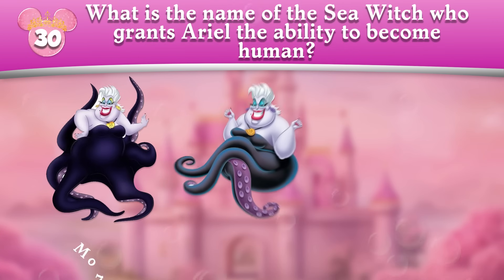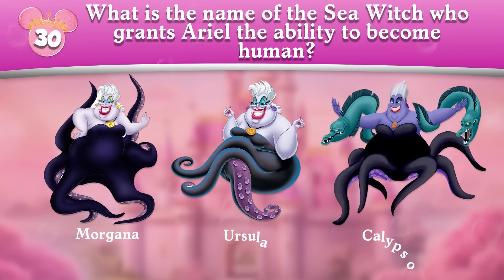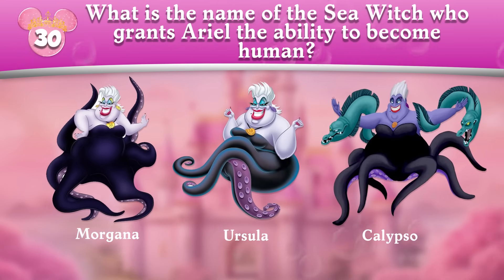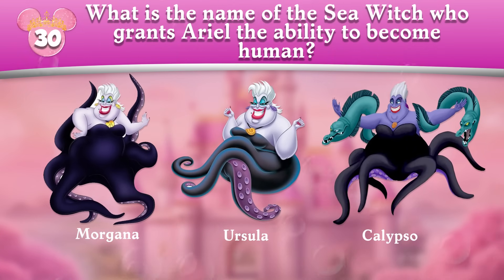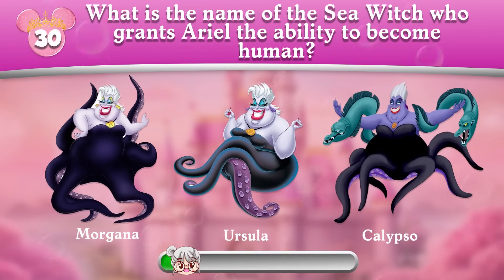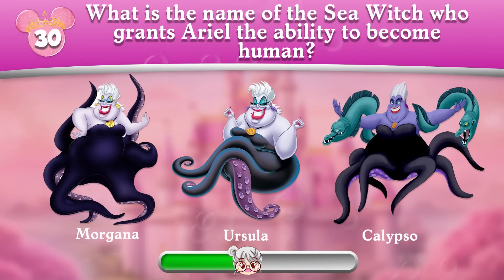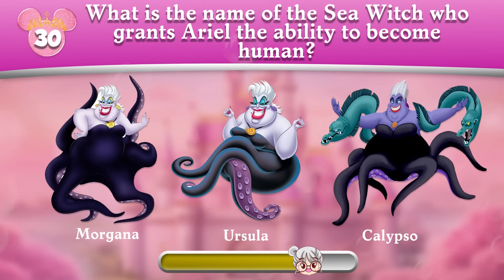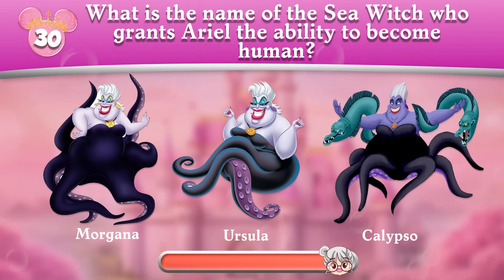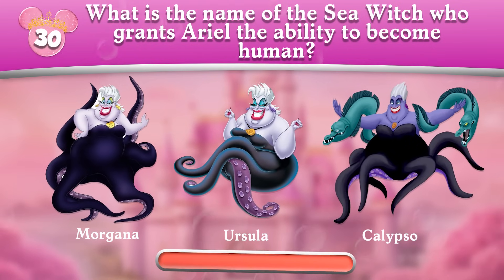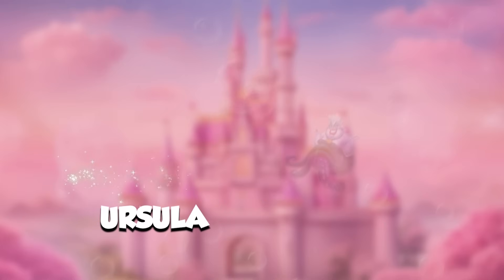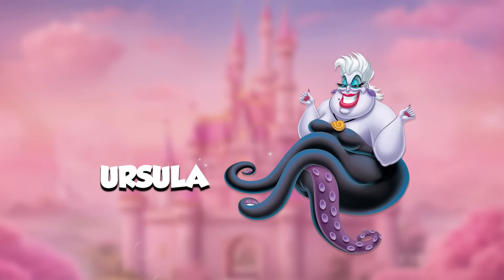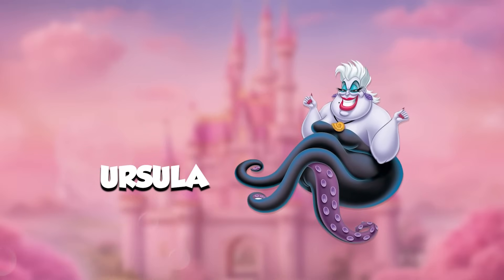Round 30: What is the name of the sea witch who grants Ariel the ability to become human? She is Ursula!